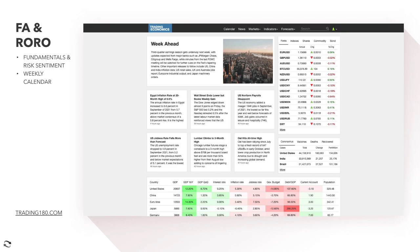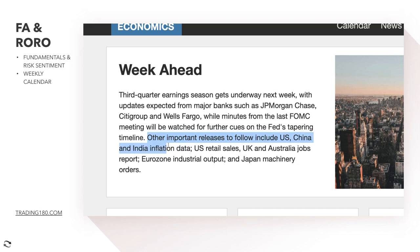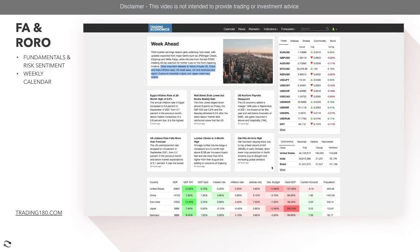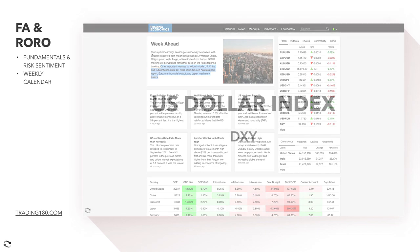So for the week ahead, we've got third quarter earnings season with stocks, while minutes from the last FOMC meeting will be watched for further cues on the Fed's tapering timeline. Other important releases include US, China, and India inflation rates, US retail sales, UK and Australia jobs reports, Eurozone industrial output, and Japan machinery orders. That's some market-moving news, especially with regards to the US at the moment.